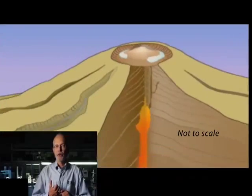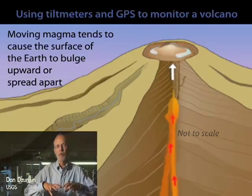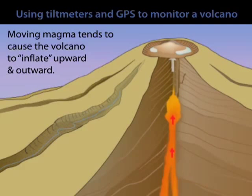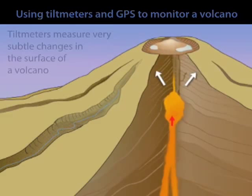Moving magma tends to deform the surface of the earth. It tends to cause the surface to bulge upward or to spread apart.